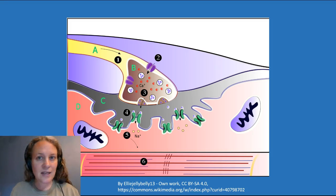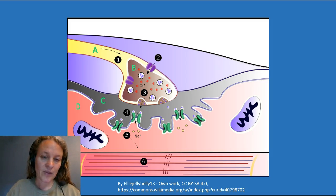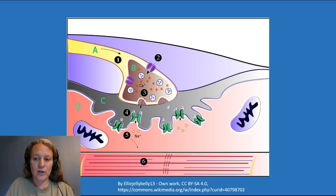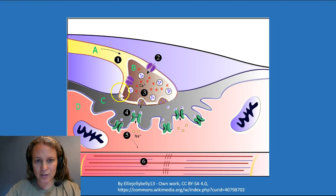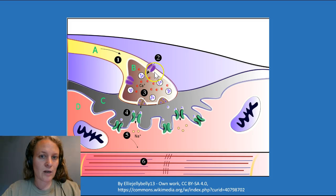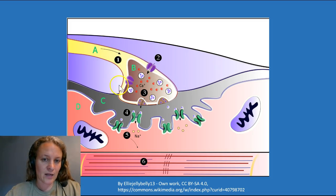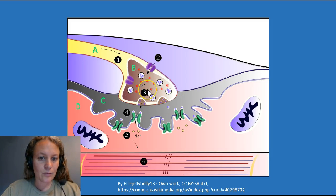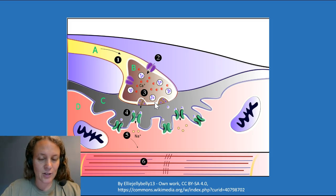Now let's talk about the big picture of how muscles contract. In order for skeletal muscles to contract, they need stimulation from the nervous system. We have what's called a neuromuscular junction. A neuron comes along — these neurons often split at the very end so a single neuron can innervate multiple muscle cells. When a neuron is stimulated, it starts an action potential that travels all the way to the neuromuscular junction. When the action potential reaches the axon terminal, calcium channels open and calcium floods into the cell, stimulating the release of vesicles containing acetylcholine.